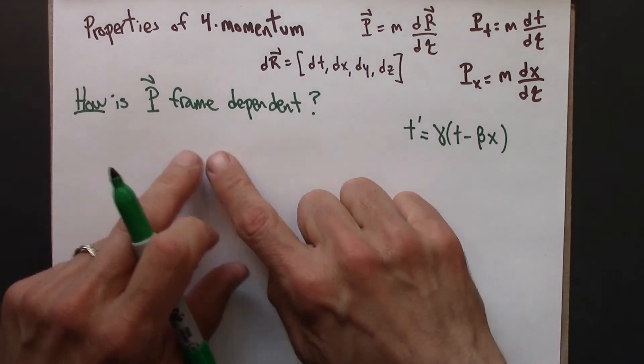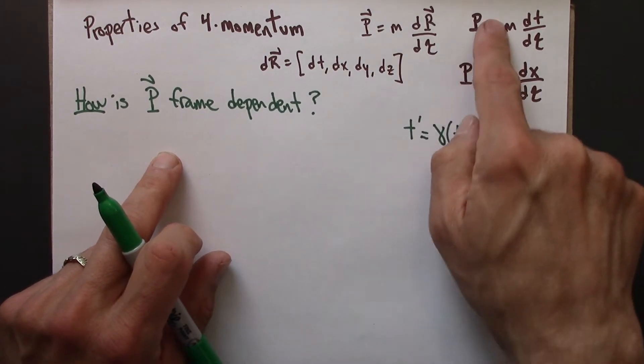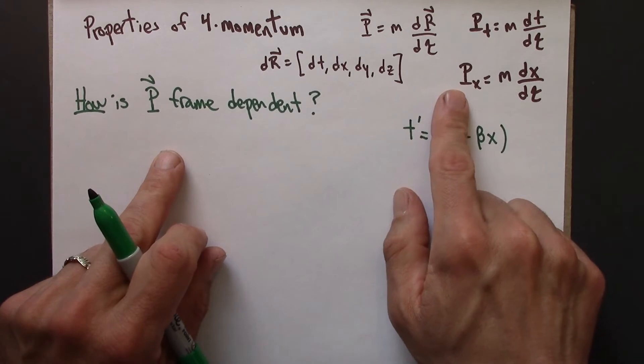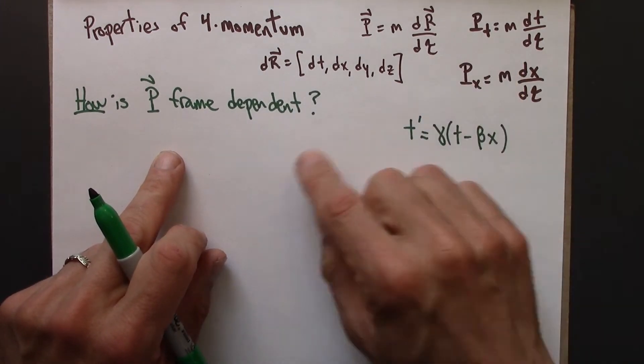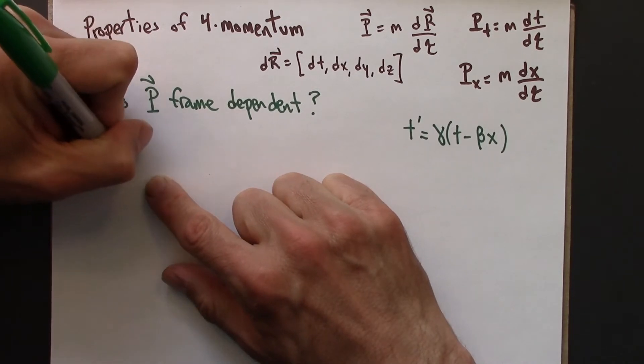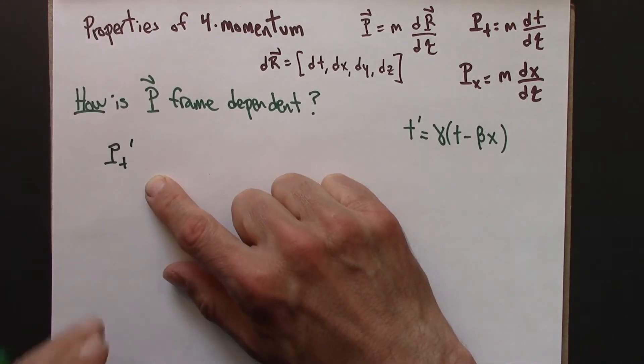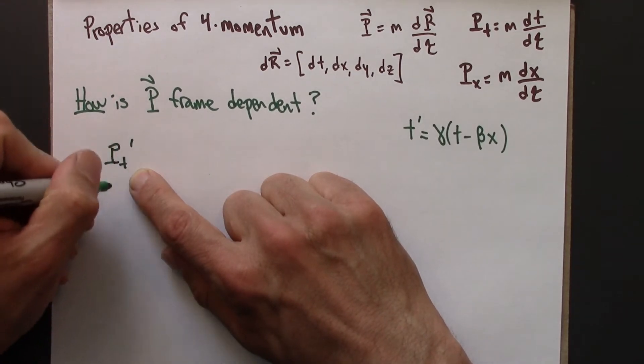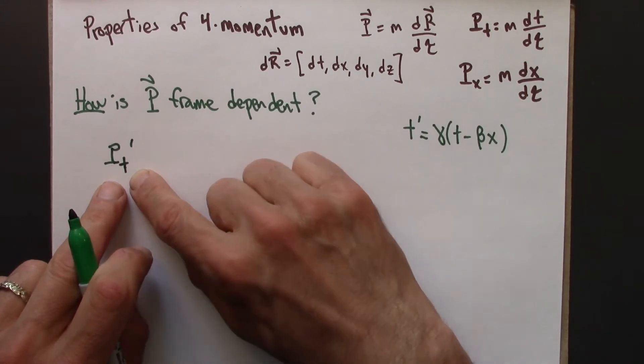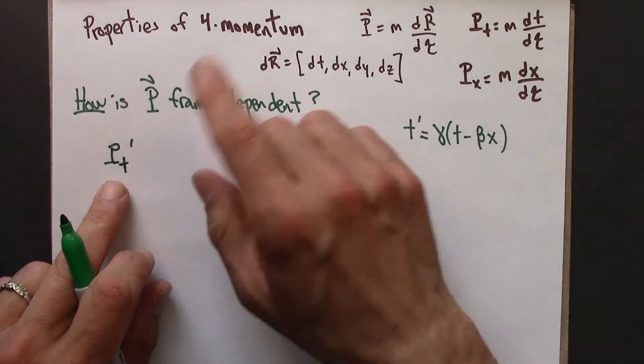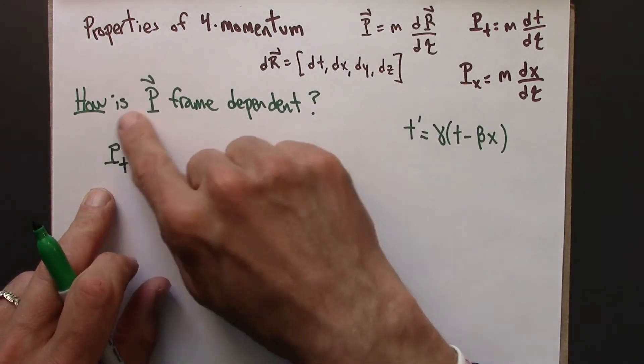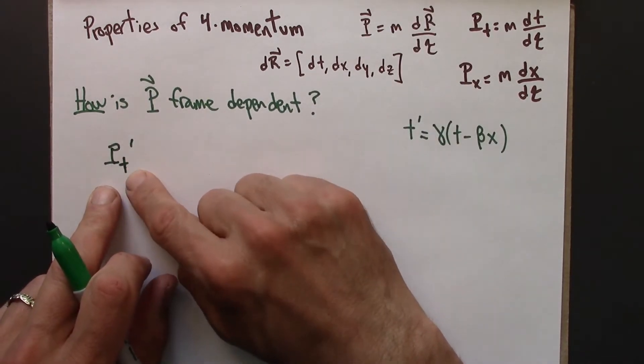So what I want to do is focus just on one component of the momentum, because the results are going to be similar for all of the components. So I'm going to do just Pt. And so what would Pt' look like? So this would be the time component of the momentum. And I realize we haven't really said what does the time component of momentum even mean. That will be in the next video. But for now, let's just think of this maybe as a mathematical thing.